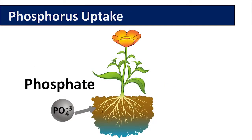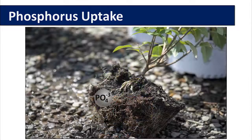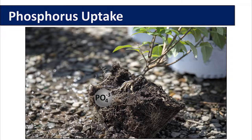Phosphorus is taken up in the plant actively, which means it requires energy. The form in which phosphorus is taken up is by phosphate ions. This is because phosphate is negatively charged and has to be taken up against the negatively charged electrochemical gradient in the root system. Once phosphorus is taken up into the plant, it is translocated to the areas of the plant that require phosphorus.